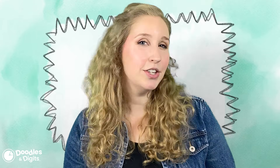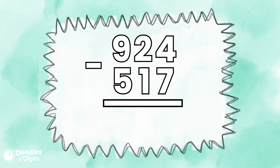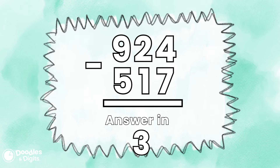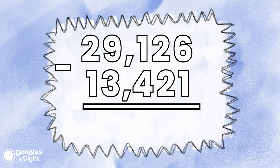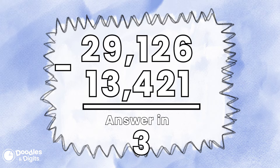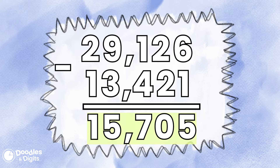Now that we've done a couple together, let's see if you can do a couple subtraction problems on your own. 924 minus 517. The answer is 407. Next: 29,126 minus 13,421. Remember, you can pause this if you need more time. The answer is 15,705. How'd you do? Did you get them correct?